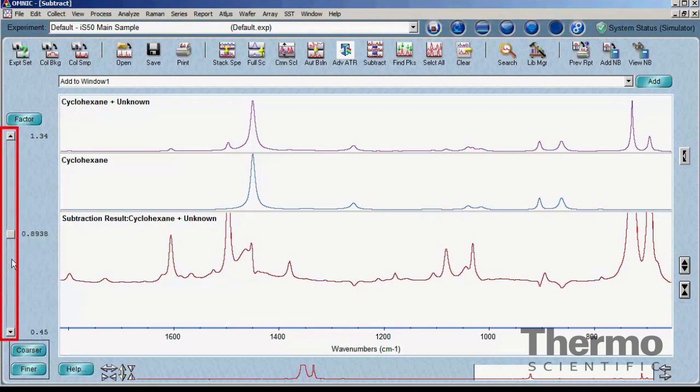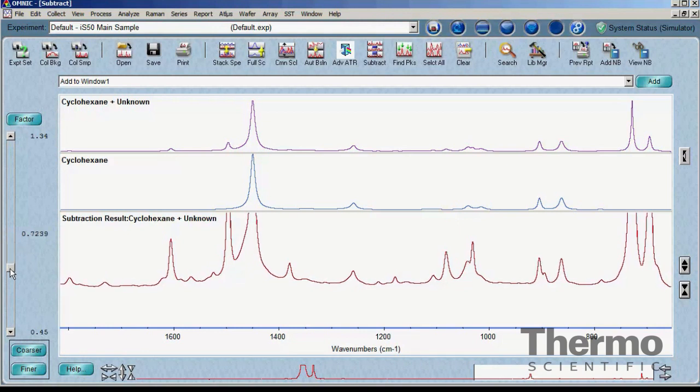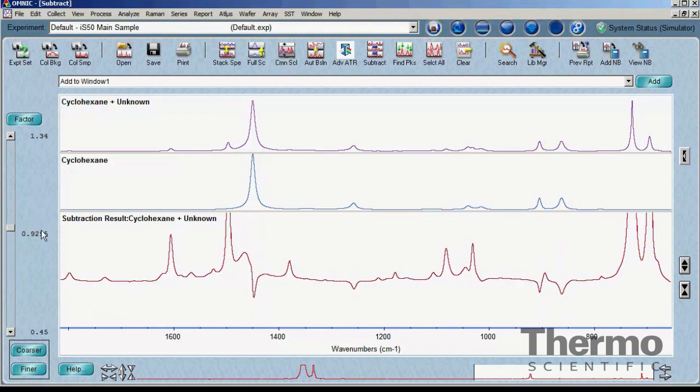Using the vertical slide on the right side of the subtraction task window, the scale factor can be interactively changed while viewing the subtraction result. A good setting is when all the peaks seen in the reference spectrum were removed in the result, keeping in mind that some peaks may be present in both. The reference peaks should not be positive or negative in the result, and by moving the slide up and down, peaks will be seen to go positive and negative, allowing for a good midpoint to be found.